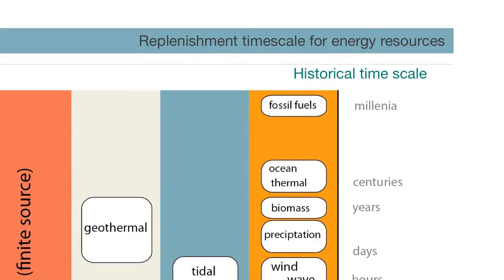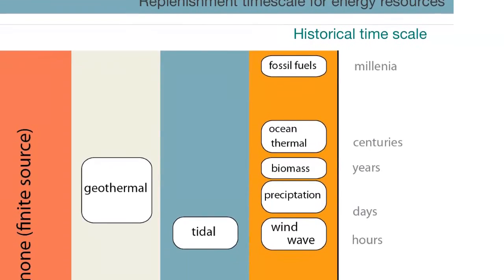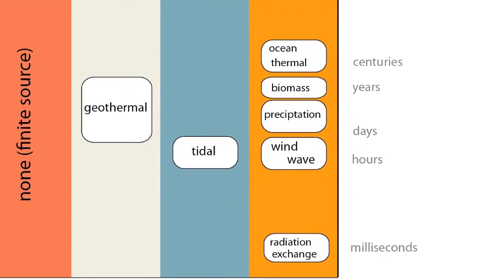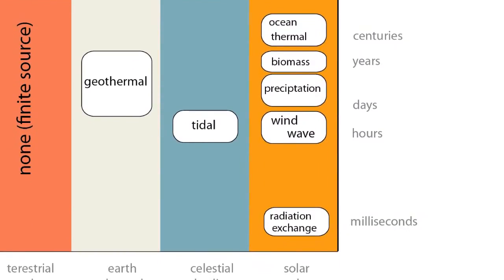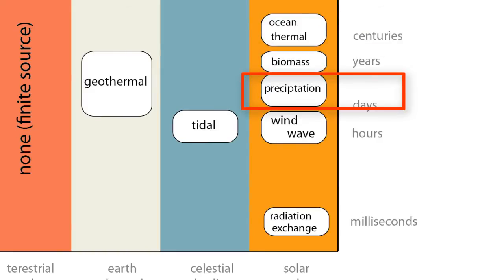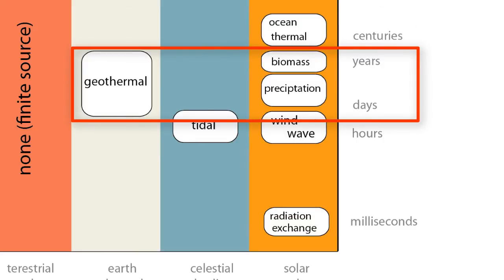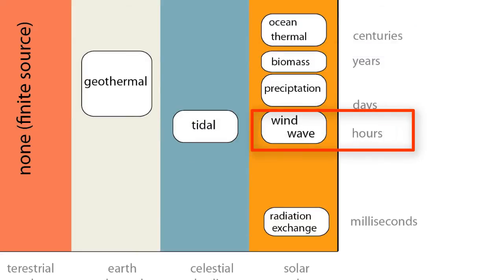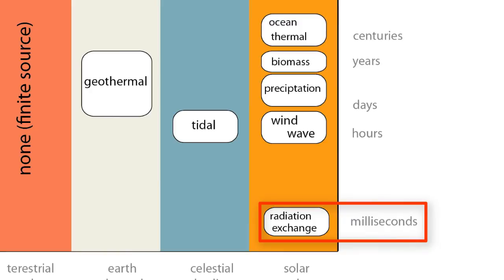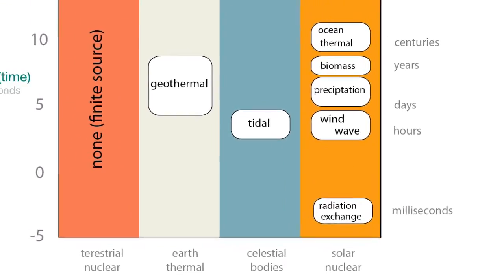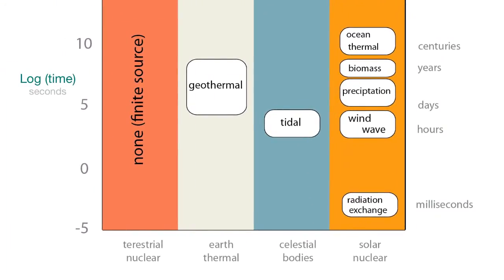There are a number of alternatives shown here that can be replenished on the order of milliseconds to years. These include biomass, precipitation, geothermal energy, tidal energy, wind and wave energy, and radiation exchange — which is essentially incoming solar energy — replenished on the order of milliseconds.